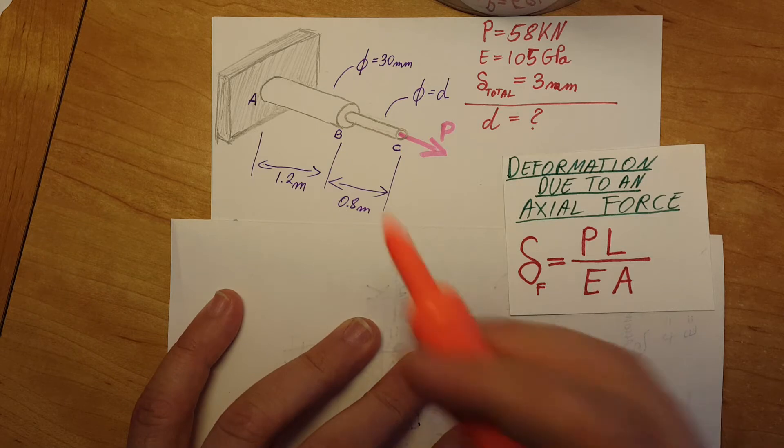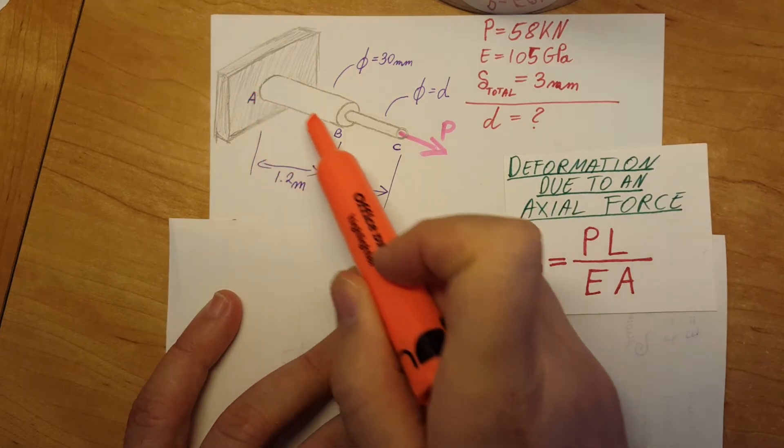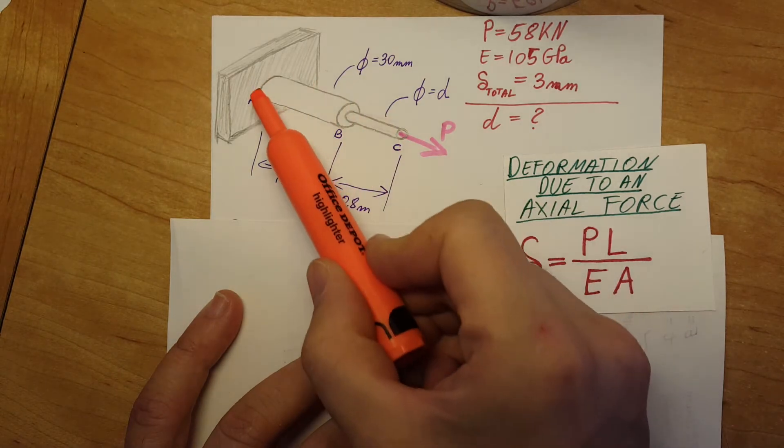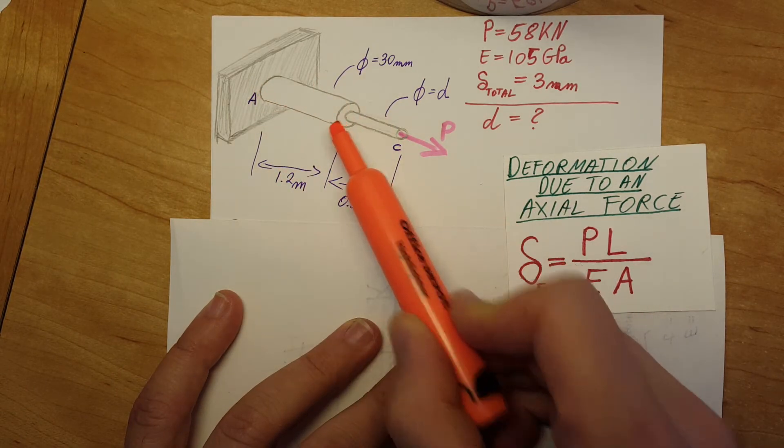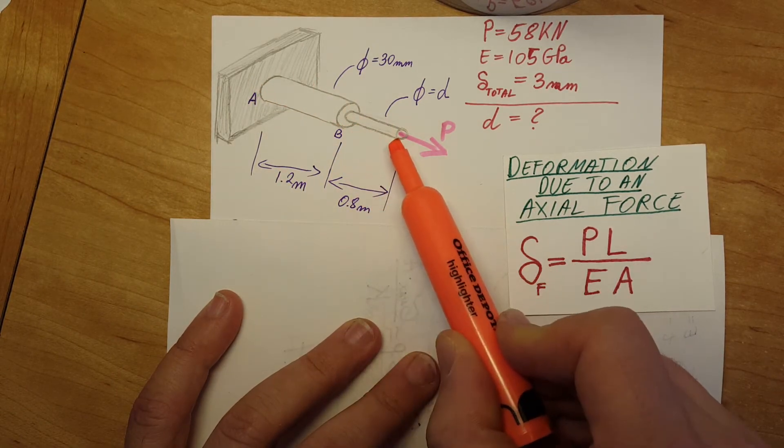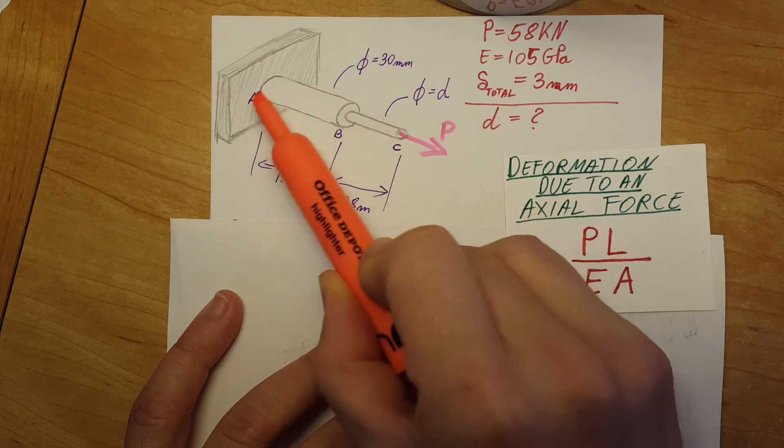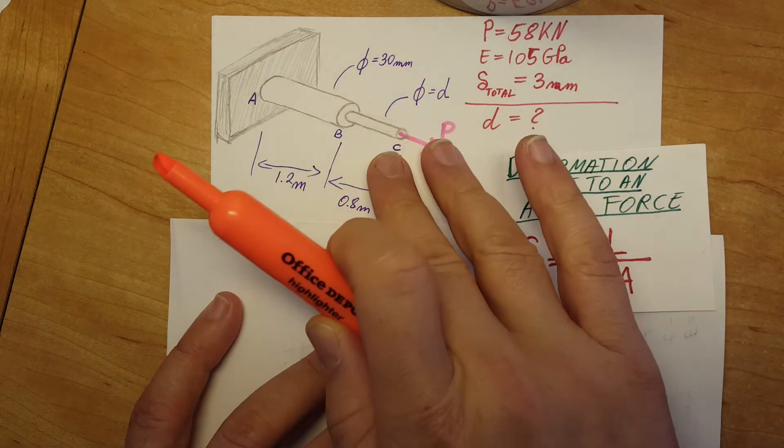If we wanted to calculate the total deformation of something like this, how would we do it? We would take this section, find this deformation, then find this section, find this deformation, and the total deformation would be this plus this. So let's write